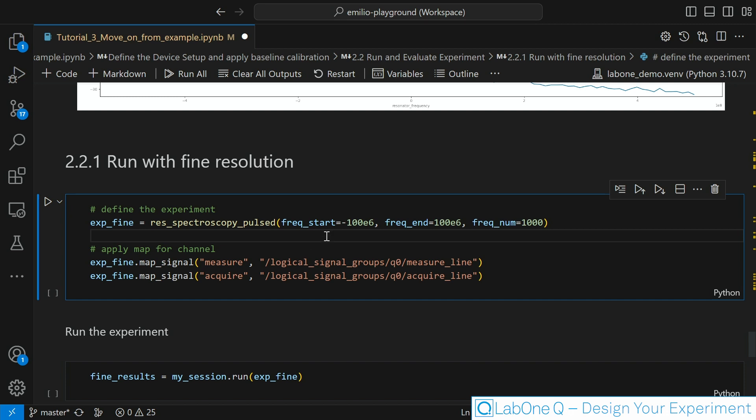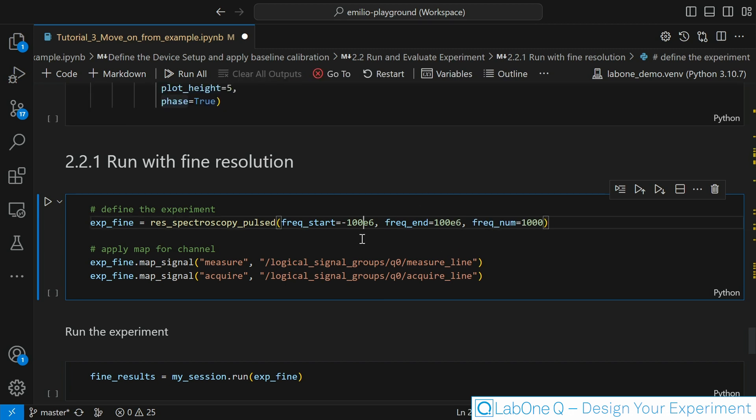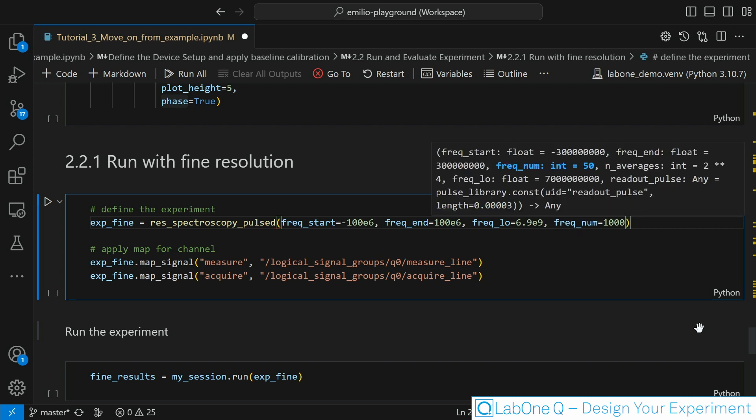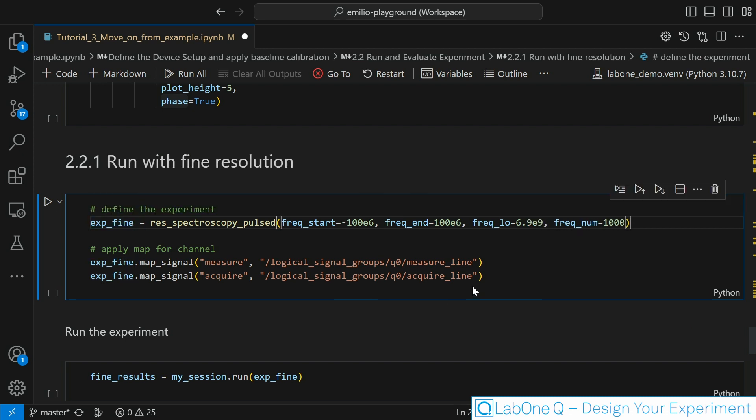Since I have a function I just need to call it again using some different parameters. I want to do a fine scan this time so I want to really look in detail where this frequency lies. We saw that the frequency was a little bit on the left so maybe let's shift the center frequency 100 megahertz on the left as well. Let's use 6.9 gigahertz as a center frequency. Then the resonance looks rather narrow so let's maybe scan from minus 10 megahertz to 20 megahertz.